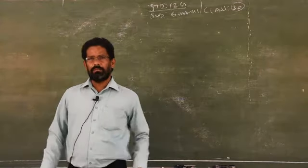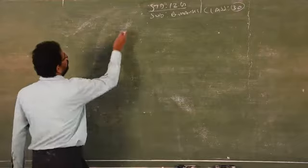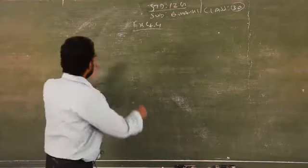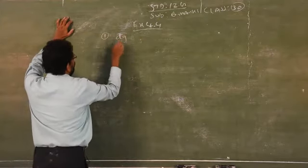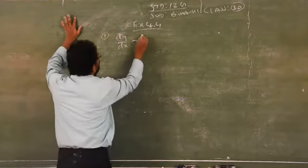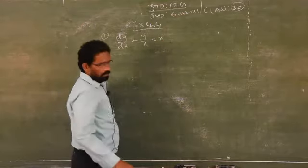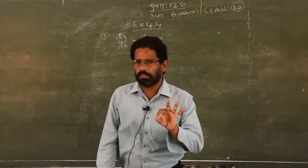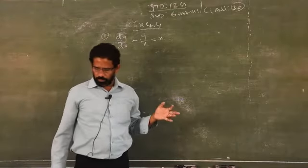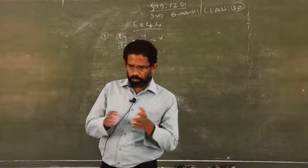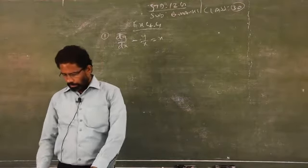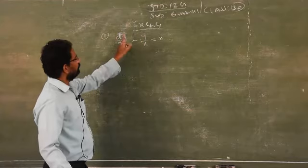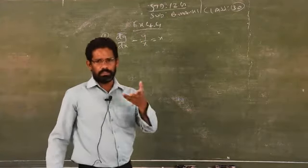Now we will go to exercise number 4.4. This is another model: dy/dx = minus y/x = x. If it is given to solve in differential equation form, refer to the three methods: separable method (exercise 4.2), homogeneous equation (exercise 4.3), and now — another method — that is linear differential equation of order 1. Linear means the power of x and y will be 1.